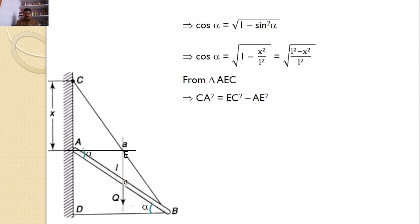And we know that from the right angle triangle AEC, CA square is equal to EC square minus AE square. So x square is equal to EC value, I calculated this value as a by 2. And AE value, I calculated this value as L by 2 into cos alpha. Hence, x square is equal to a by 2 whole square minus L by 2 cos alpha whole square.